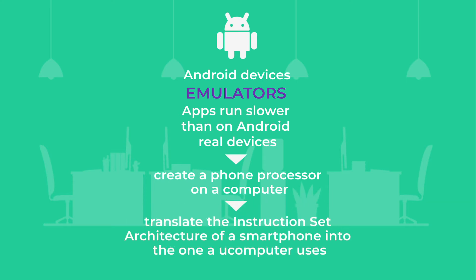To do this, emulators have to translate the Instruction Set Architecture of a smartphone into the one a computer uses. This process, known as binary translation, slows down an emulator's performance.